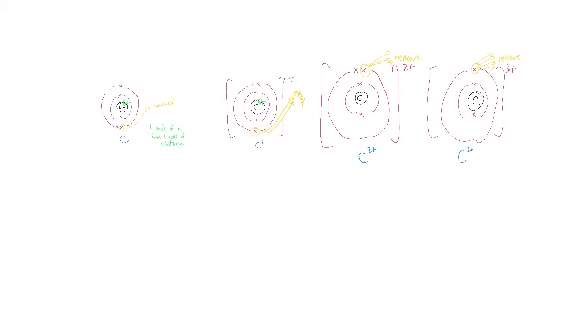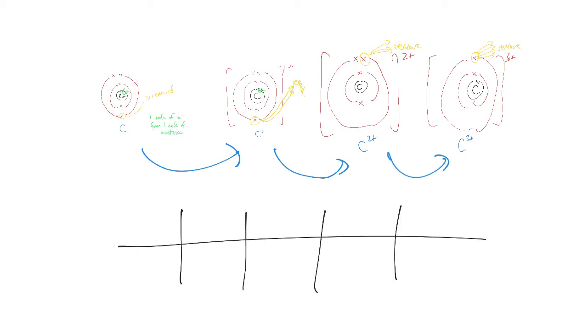Here we have C going from C neutral to C1+, then C1+ going to C2+, then C2+ going to C3+. If I was to show this in a table, it would be energy in kilojoules and electron removed. We've got the electrons being removed as we go across.